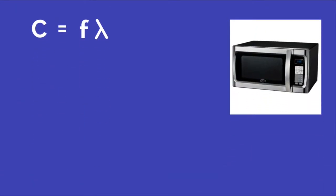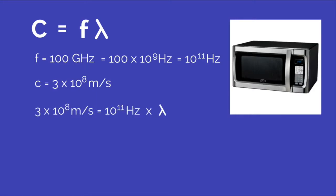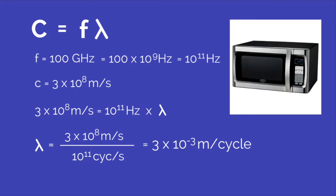Let's compare that to the wavelength of an average microwave, with a frequency of 100 billion cycles per second, or 100 gigahertz. 100 gigahertz can be written as 100 times 10 to the ninth hertz, or 1 times 10 to the eleventh hertz. We still have C as 3 times 10 to the eighth meters per second. So 3 times 10 to the eighth meters per second equals 10 to the eleventh hertz times lambda. So lambda equals 3 times 10 to the eighth meters per second over 10 to the eleventh cycles per second, and that gives 3 times 10 to the negative third meters per cycle. That's three thousandths of a meter, or three millimeters. Much smaller than an AM radio wave.